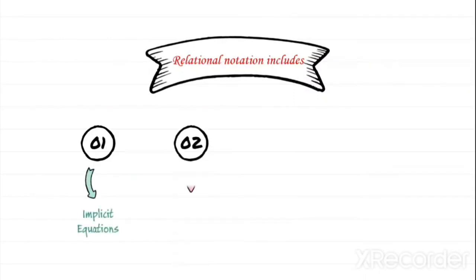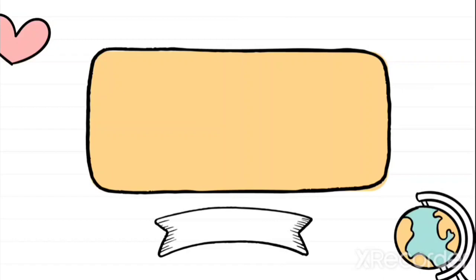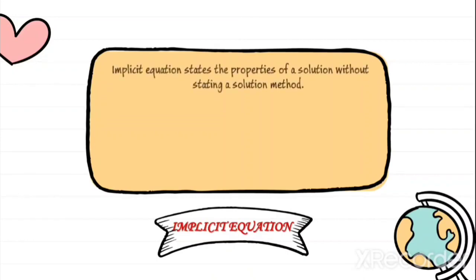Now let's see some of the specific techniques of relational notation in formal software specification. Relational notation includes implicit equation, recurrence relation, algebraic axioms, and regular expression. Let's see about them one by one in a short and clear manner with examples.